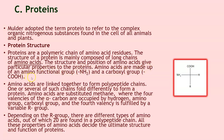Amino acids are made up of an amino functional group, that is NH2, and a carboxyl COOH group — one amino group and one carboxyl group. Amino acids are linked together to form polypeptide chains, and one or several such chains fold differently to form a protein. Amino acids are substituted methane where the four valencies of the alpha carbon are occupied by hydrogen, an amino group, a carboxyl group, and a variable R group.